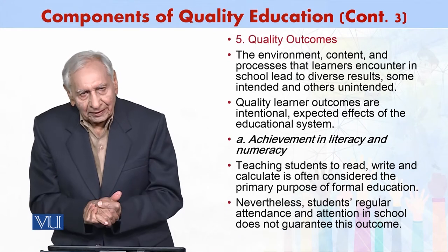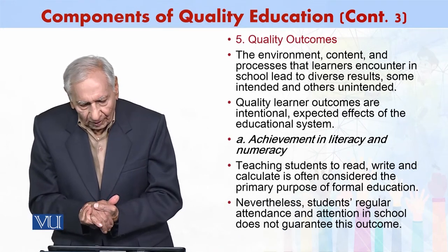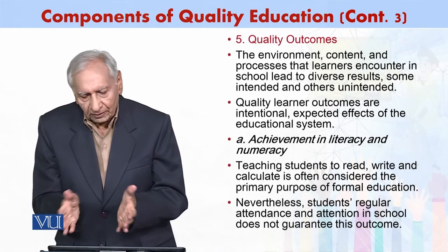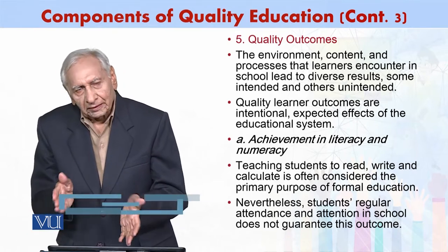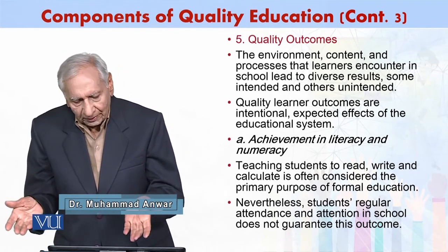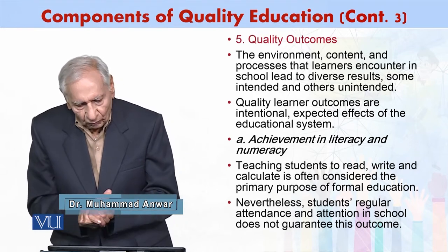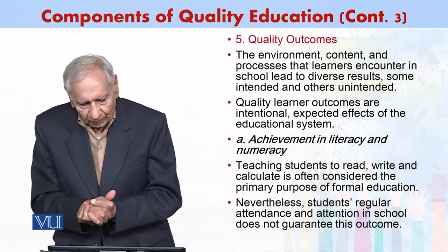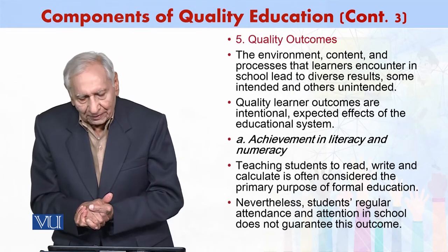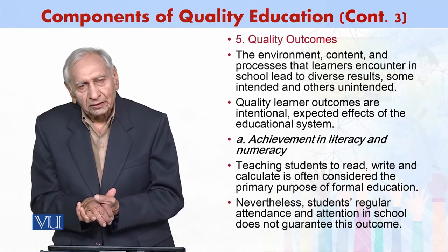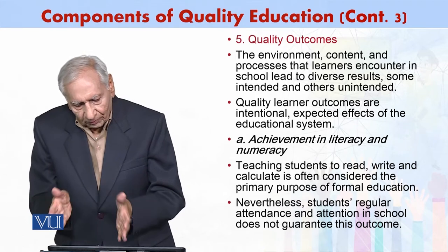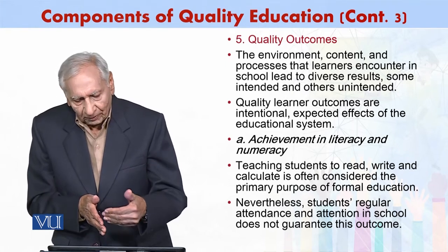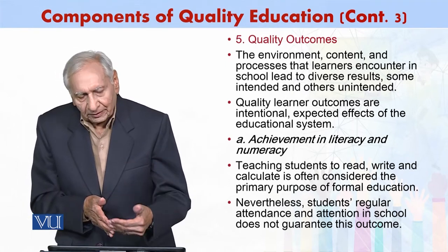The environment, the content, and the processes that learners encounter in school lead to diverse results, and these results can be intended or unintended. But when we talk about quality outcomes, we are looking for quality learning outcomes that are intentional, expected effects of the educational system. If we look at the outcome, we are looking for achievement in literacy and numeracy.